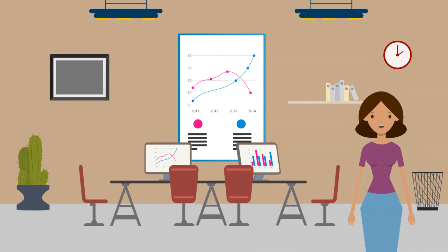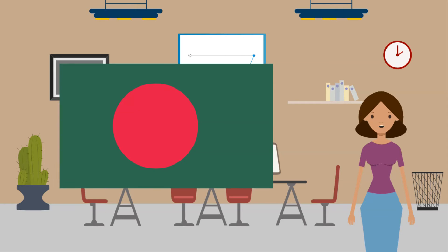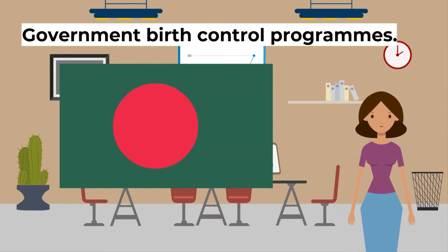The structure of a country's population has an important effect in future years. In a less economically developed country, the youthfulness of the population means there will be a large number of potential parents, which can keep the birth rate high. Unless the birth rate falls, a decline in infant mortality will increase the width of the pyramid base and the country will experience an ever-increasing rate of population growth. Countries such as Bangladesh have set up government birth control programs — the age of marriage has been raised and contraceptive education is more widely available.